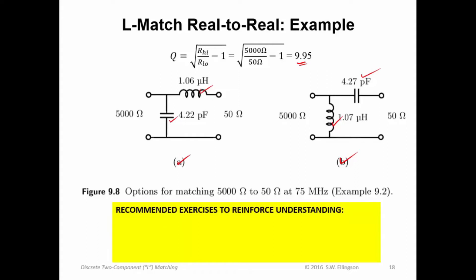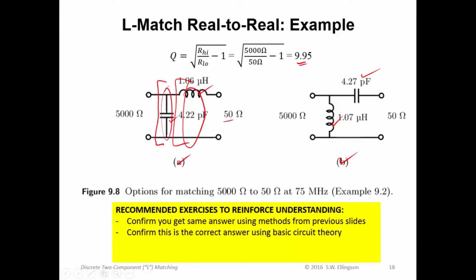So here are some exercises just to make sure you see what's going on here. First, confirm that you get the same answer using methods from the previous slides. In other words, this is a special case. This should also be the answer if you start off with the most general form of the solution that I showed at the very beginning of this lecture. You should confirm that this is the correct answer using basic circuit theory. Again, here you have 50 ohms in series with an inductor. You should be able to compute that impedance. Then you should be able to compute this impedance, which is a parallel combination of this and this. And that should be equal to 5 kilohms.